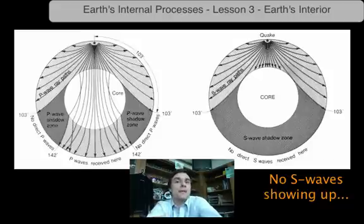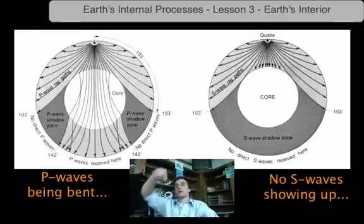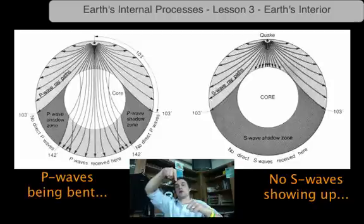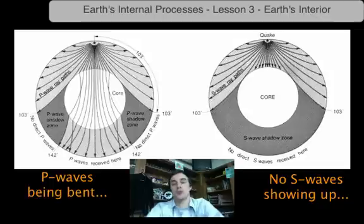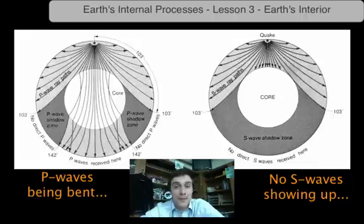Not only that, but we were noticing that the P-waves were not necessarily being received at the points we thought they would be received. If an earthquake was to happen here, we thought the P-wave would show up here. It was showing up a little bit off-center. So, not only did we have the S-waves being absorbed, hinting to us that the outer core was liquid, but we also had the P-waves being refracted or bent.